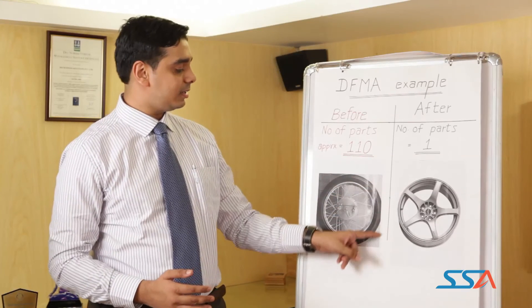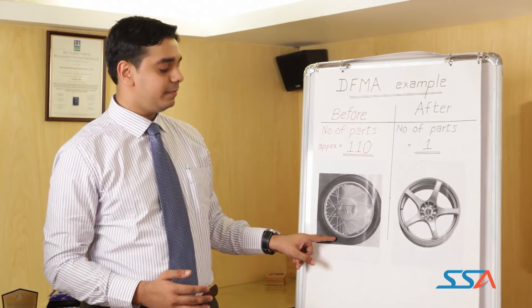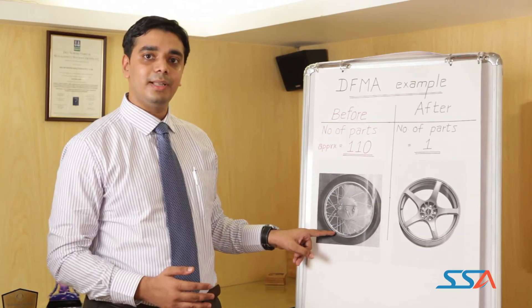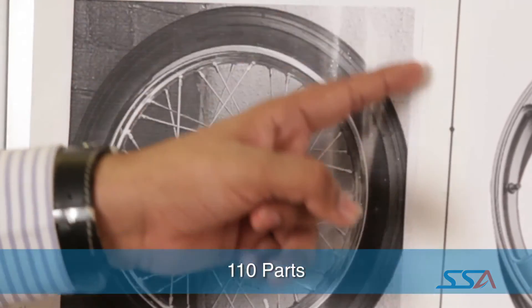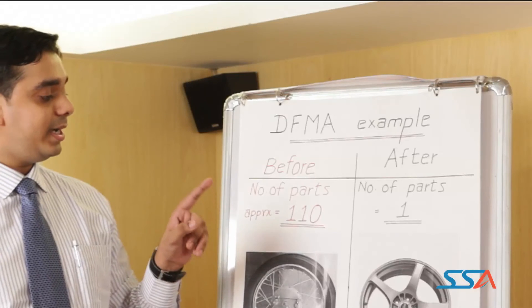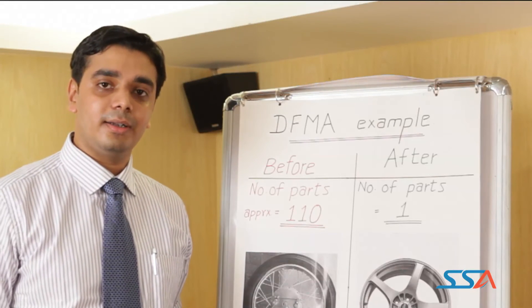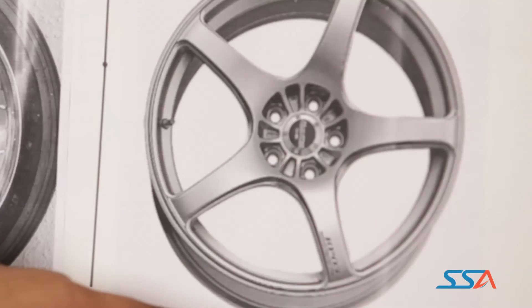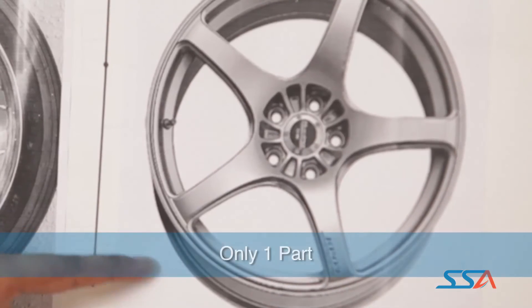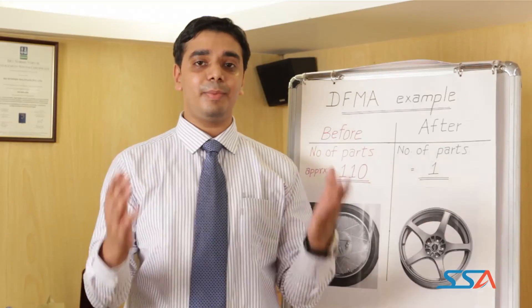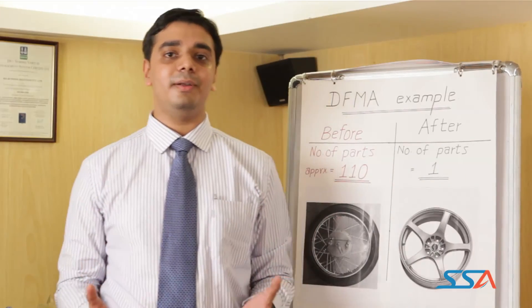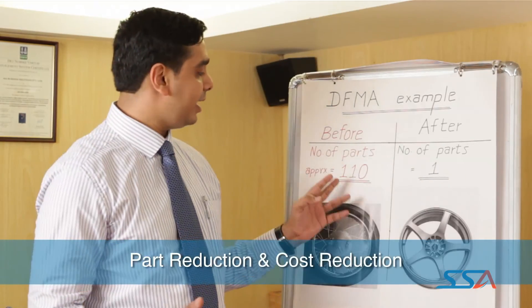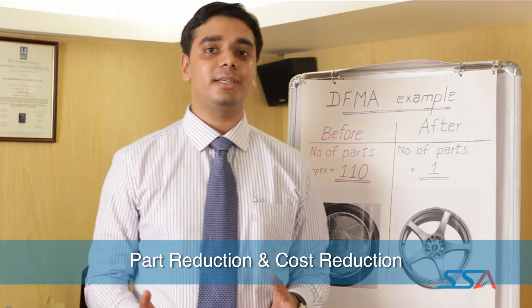Consider this design — an automotive wheel designed traditionally by designers, which has around 110 parts. When DFMA was applied to the same product, the result was significant: it came down to only one part. That's the power of DFMA. When you incorporate DFMA in a product design, part reduction and cost reduction are significantly improved.